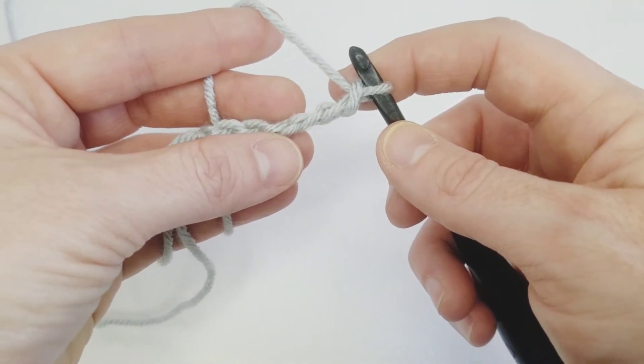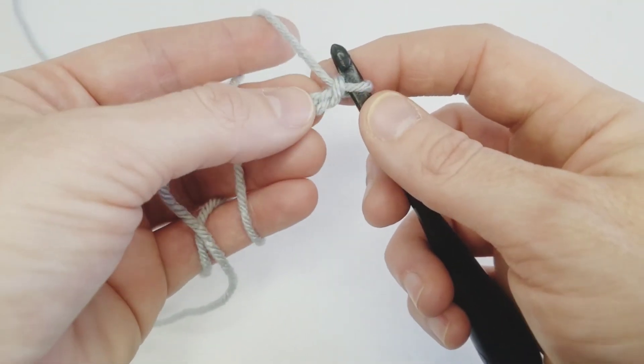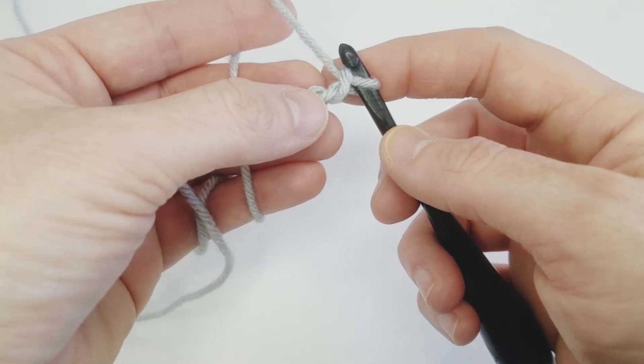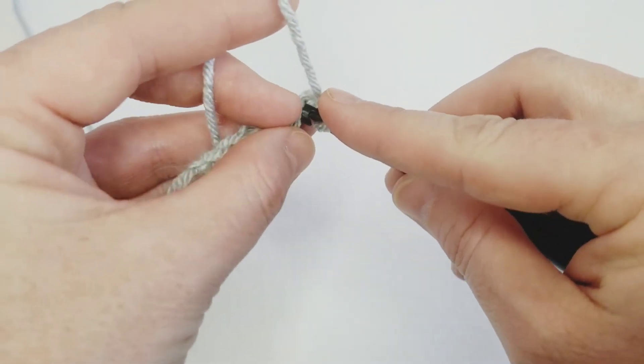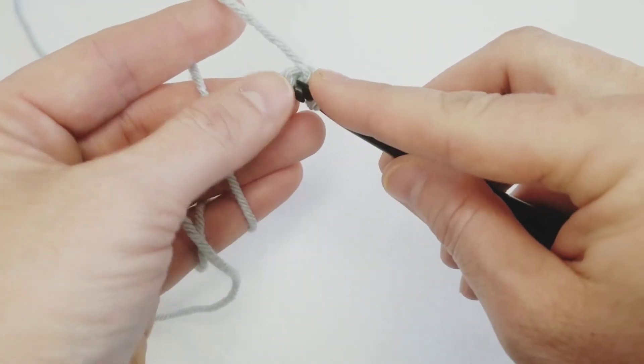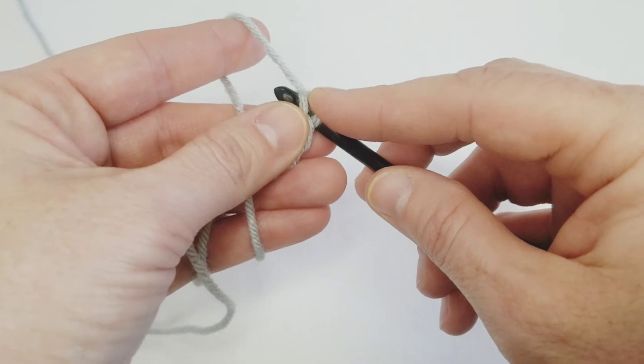We're going to go to the second bump from our hook—so your second chain—and we're going to work into the back bump simply by sticking your hook through just that back bump, straight through. And you're going to yarn over and you're going to pull up a loop.